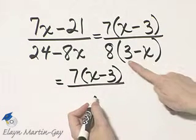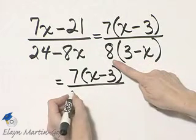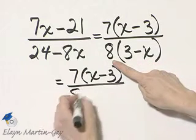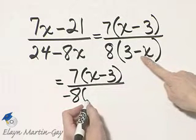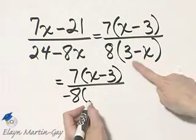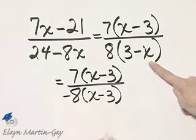If I factor a negative 1 from these two terms, watch what happens. I'll have negative 8, and I will have negative 3 plus x, and negative 3 plus x is the same as x minus 3.